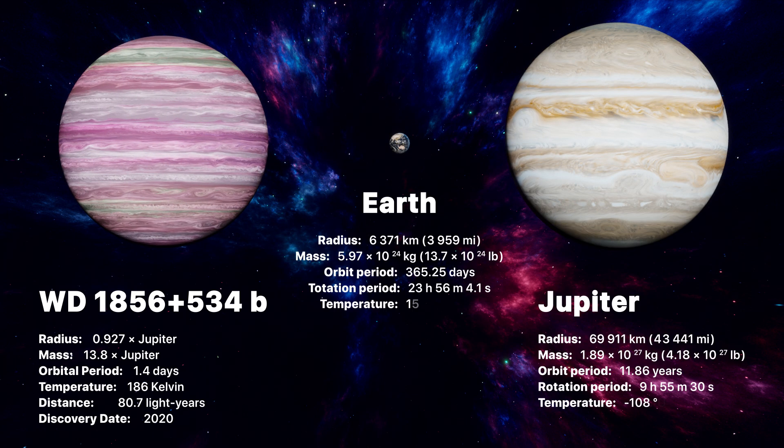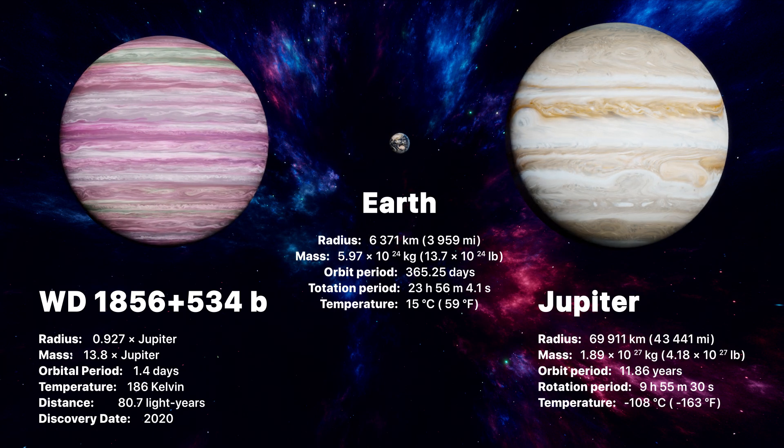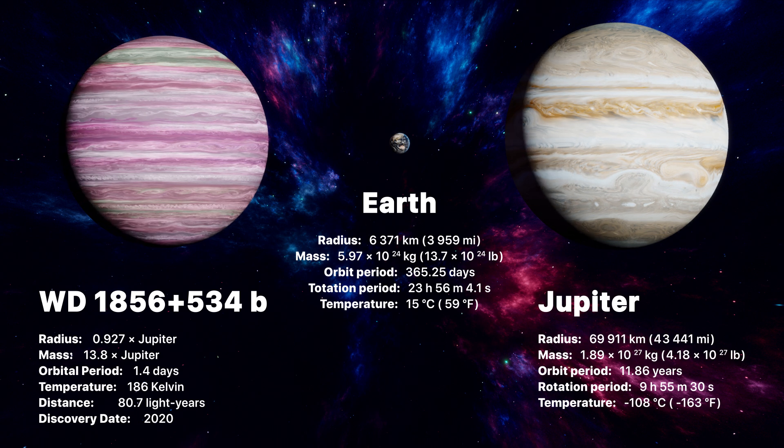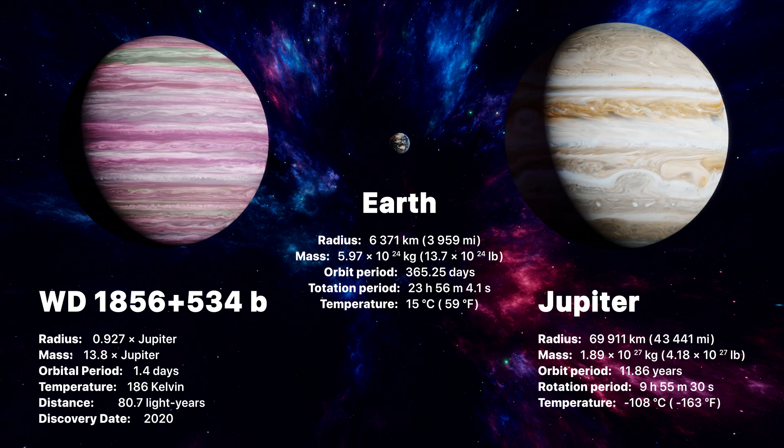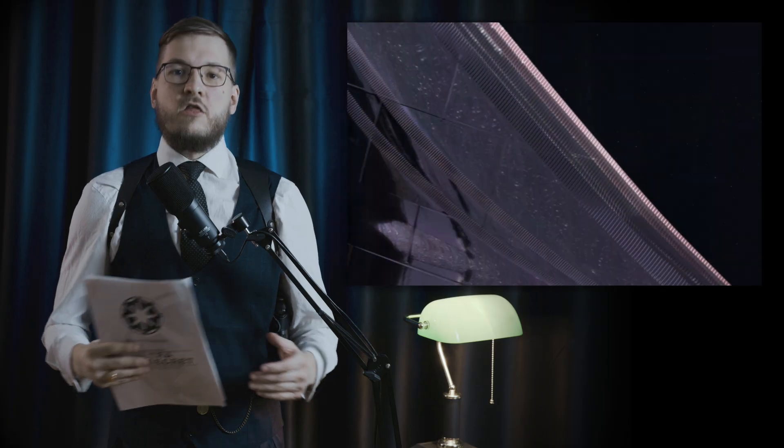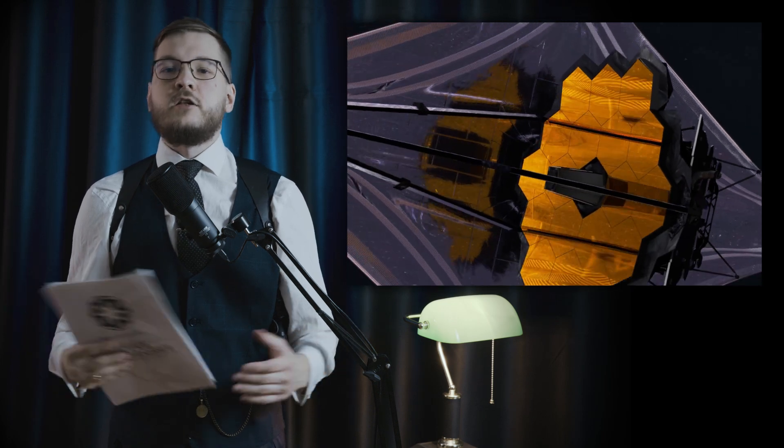WD is a gas giant, roughly the size of Jupiter, or over 10 times the size of Earth, and the mass of 13.8 Jupiters. Thanks to the James Webb Space Telescope,